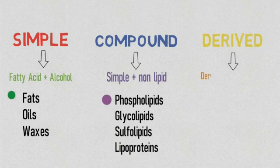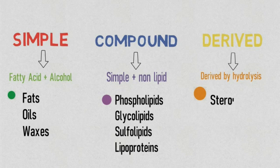Derived lipids are made by hydrolysis of simple or compound lipids, like steroids and isoprenoids.